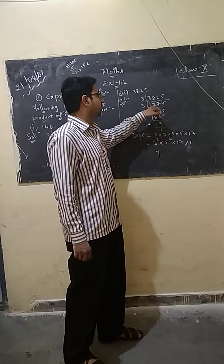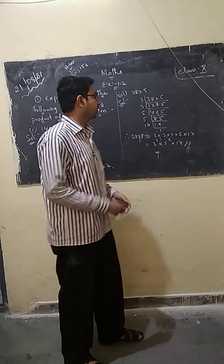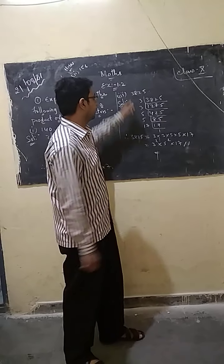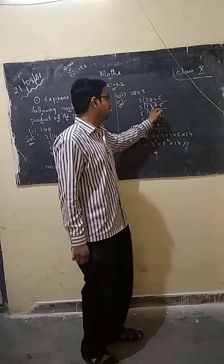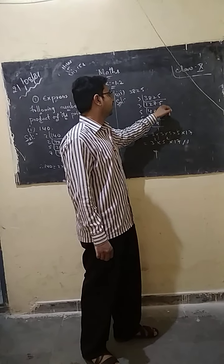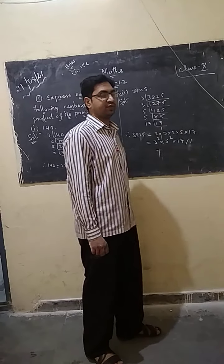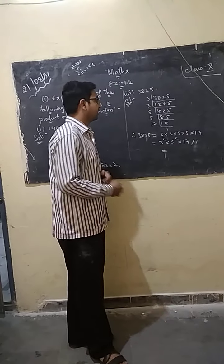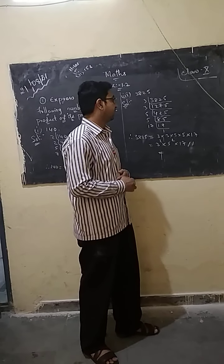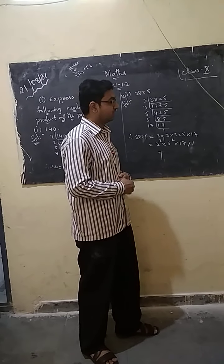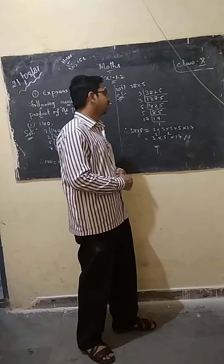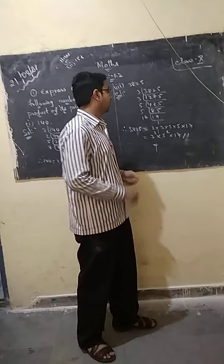The second number, 136, I have given as a work problem. Now for the third number, 3825. Is 3825 divisible by 3? To check: 3 times 1 is 3, 3 times 2 is 6 — checking the digit sum. Yes, it is divisible by 3.